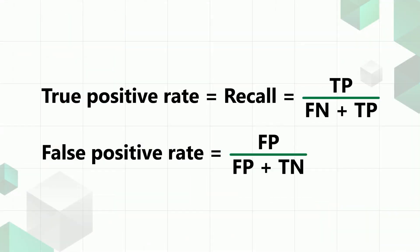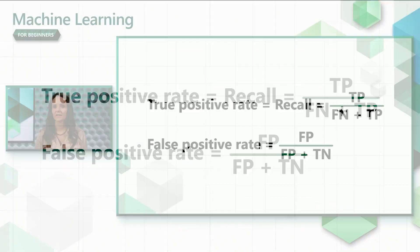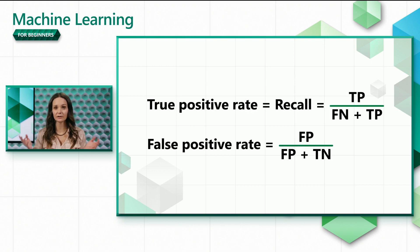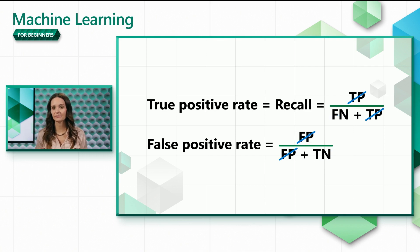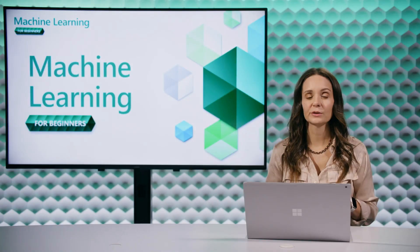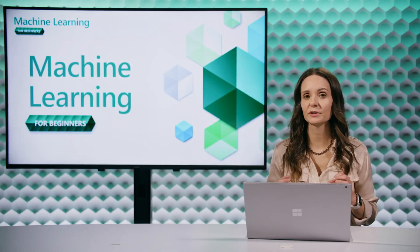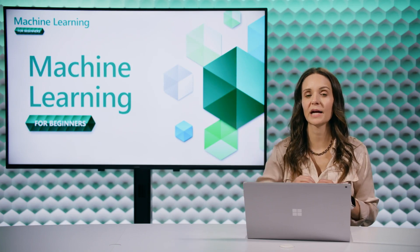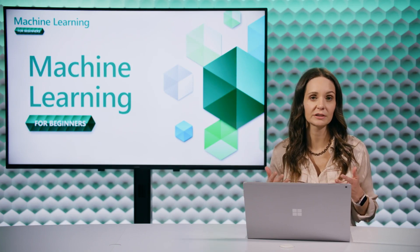Let's think about the shape of the ROC curve and see how it relates to the formulas. If our threshold is zero, then we classify all inputs as positive. Because we don't have any values classified as negative, our true positive and false positive rates are both one. On the other hand, if our threshold is one, then we classify all inputs as negative. Because we don't have any values classified as positive, our true positive and false positive rates are both zero. So our ROC plot will always contain the points (0, 0) and (1, 1).